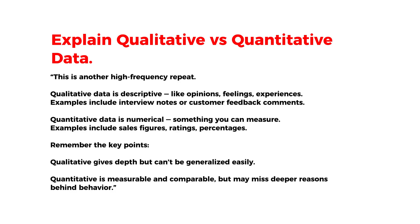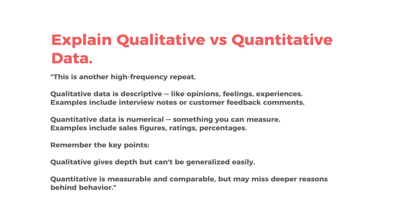Quantitative data is numerical — something you can measure. Examples include sales figures, ratings, and percentages. Key points to remember: qualitative gives depth but can't be generalized easily, while quantitative is measurable and comparable but may miss deeper reasons behind behavior.